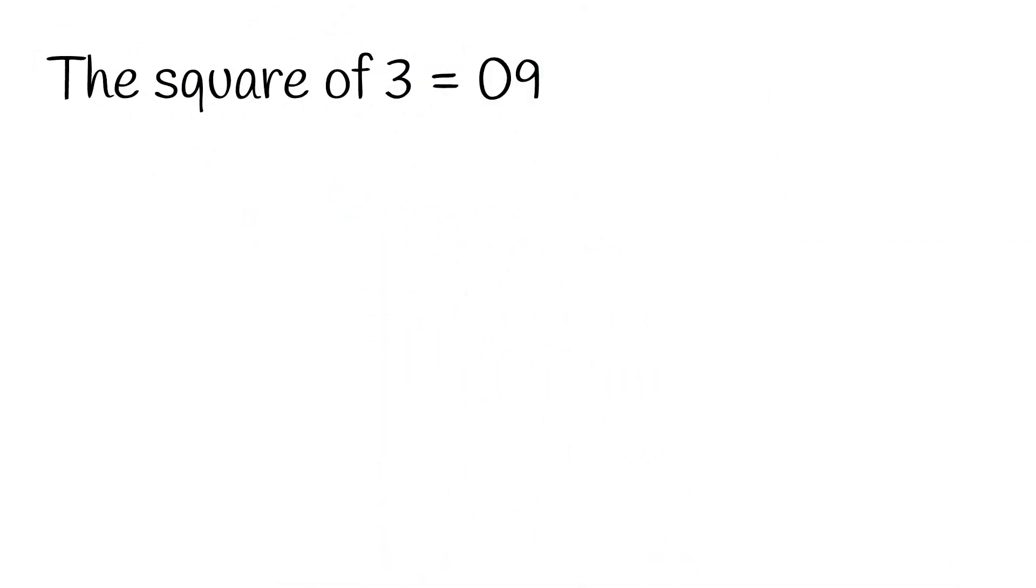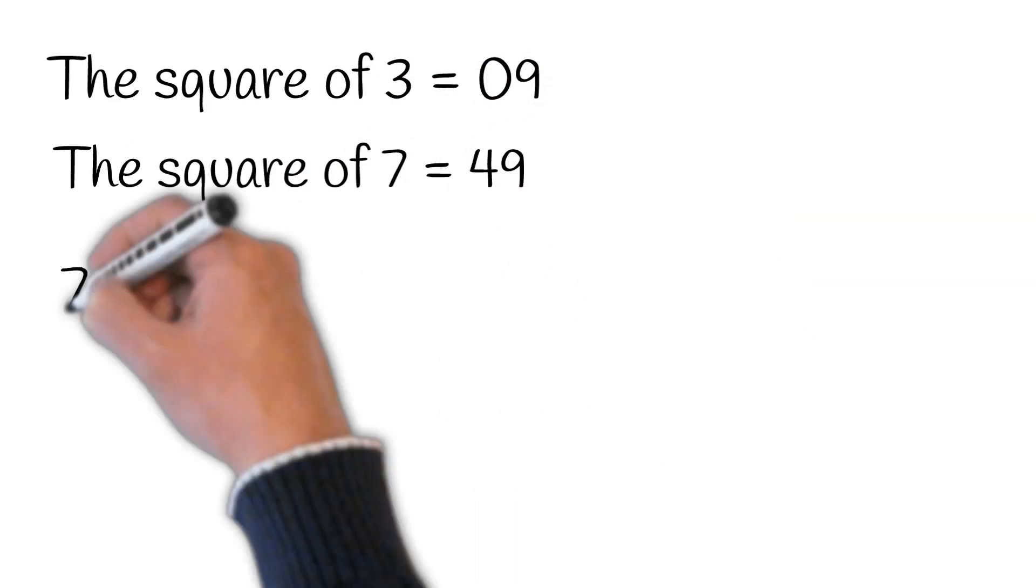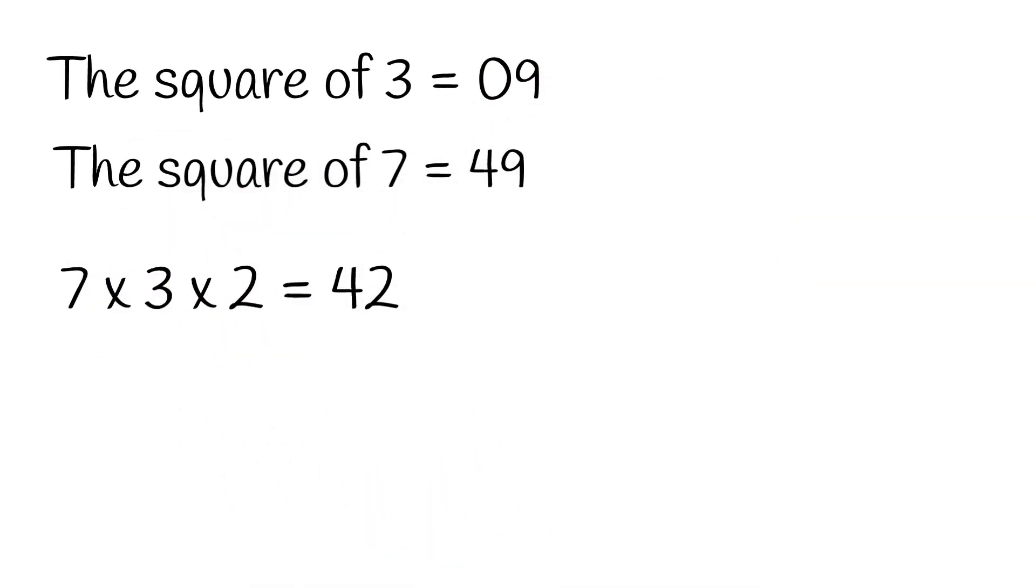Say the square of 73. Get the square of 3 that is 9, or write 09. The square of 7 which is 49. Then the product of 7 and 3 multiplied by 2 is 42. Add them together.